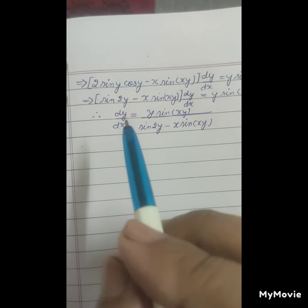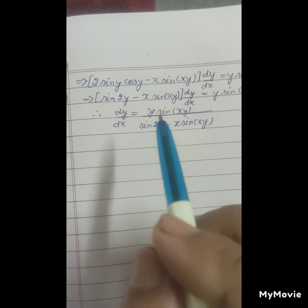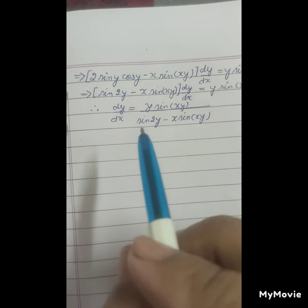Taking this term to denominator, dy upon dx equals to y sine xy upon sine 2y minus x sine xy.